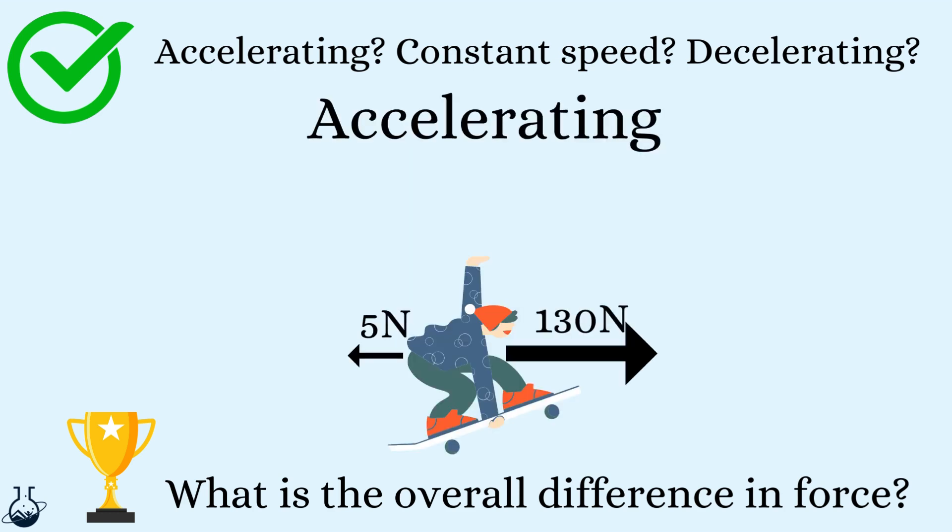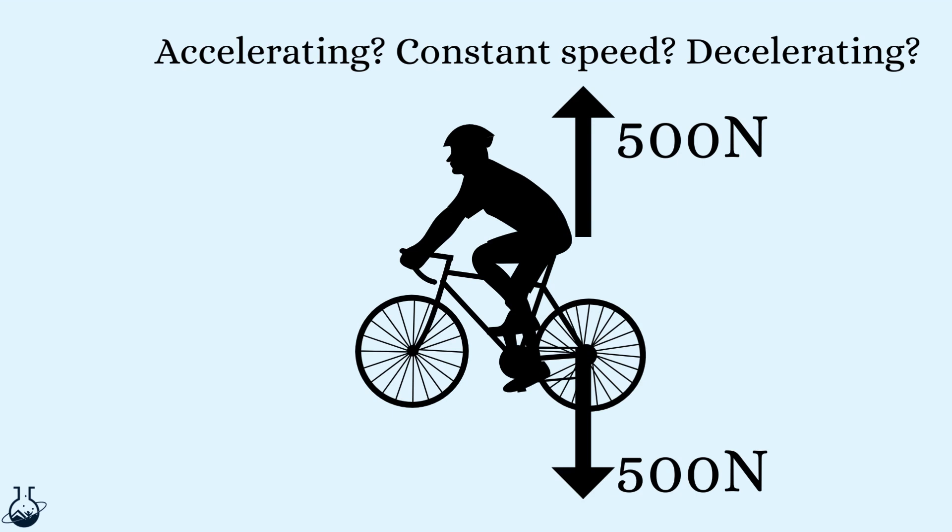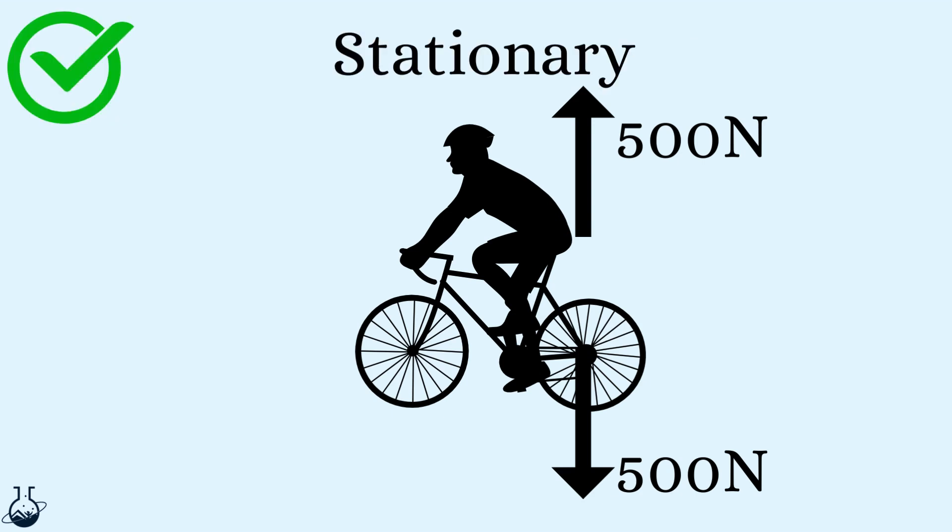This skateboarder is accelerating with a resultant force of 125 newtons. And this cyclist is decelerating by 195 newtons. What about this cyclist then? Well, this cyclist has 0 newtons of thrust and 0 newtons of drag. Only weight and reaction force are in play here. So the cyclist is stationary, staying still.